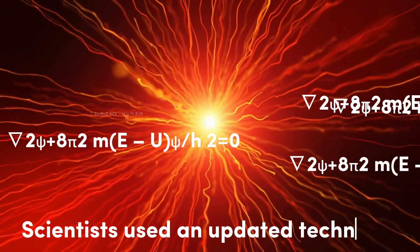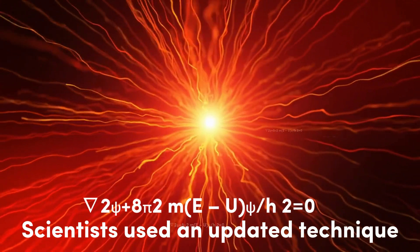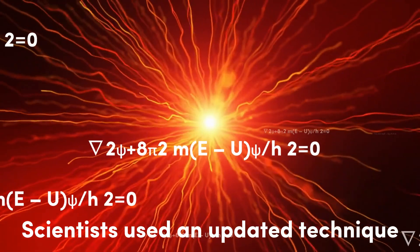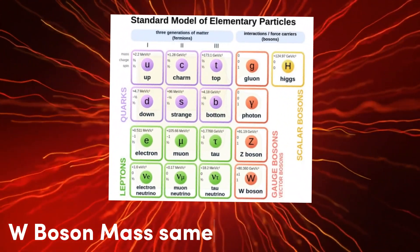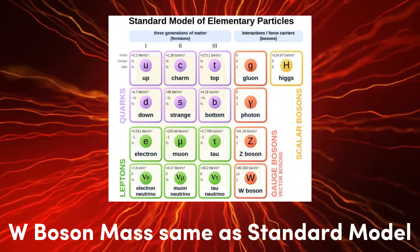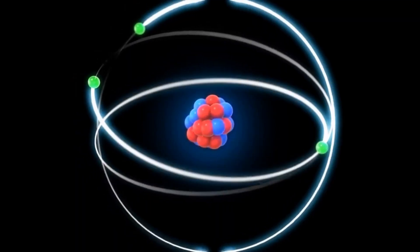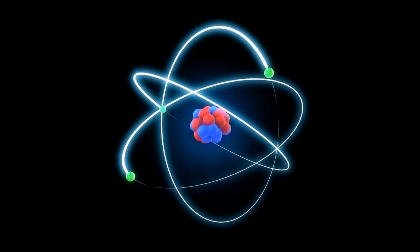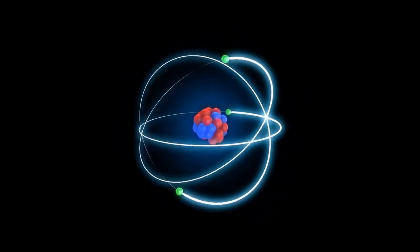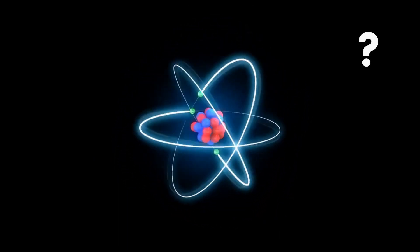However, scientists have now run the same numbers again using an updated technique, and have discovered that the W boson's mass is a close fit with the standard model's predictions after all. While this means we may not need a revolutionary rethink of our current theory of particle physics, there are still many unanswered questions in the field.